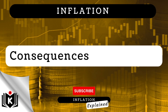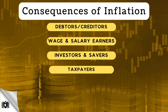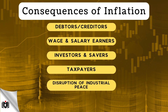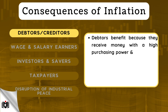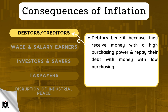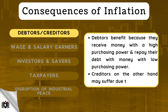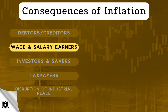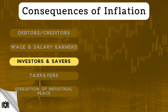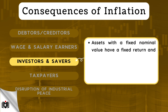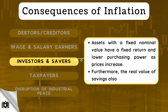There are numerous consequences of inflation. Starting with debtors and creditors: debtors benefit because they receive money with a high purchasing power and repay their debt with money of lower purchasing power. Creditors, on the other hand, may suffer due to inflation. Inflation also impacts wage and salary earners — people with a fixed income will be able to purchase less as prices are rising. Another consequence of inflation can be felt by investors and savers. Assets with a fixed nominal value have a fixed return and lower purchasing power as prices increase, and the real value of savings also decreases.